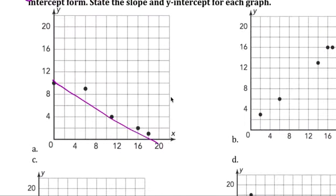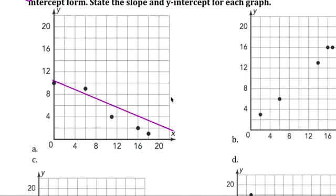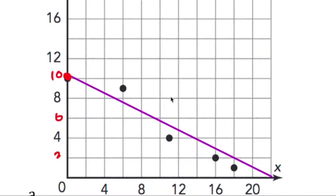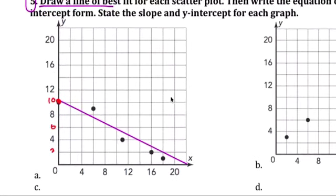The only difference is for this one you need to draw in your line of best fit. Some of you may have different lines, so you'll have different equations. Depending on where you draw your line — here, here, here — your equation will all be different. I would start with the y-intercept. It's counting by two: 2, 4, 6, 8 — that's 10. I'm going to estimate it to be 10. The y-intercept is 10.